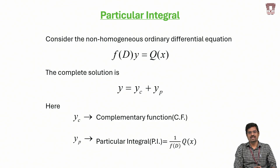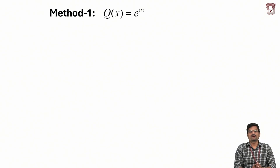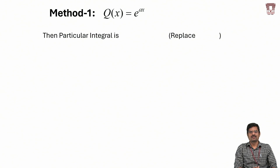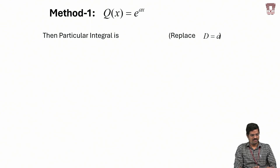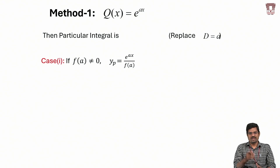The methods are classified depending on the right-hand side function Q(x), the non-homogeneous function. Method 1 applies when Q(x) is of the exponential form, i.e., Q(x) = e^(ax). The key hint is: replace D with a in f(D). In Case 1, after replacing D with a, if f(a) is non-zero, then yp = e^(ax) / f(a).